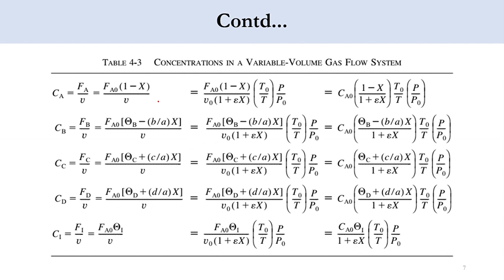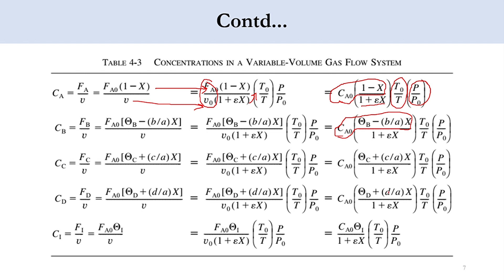The stoichiometric table is built as follows. C_A = Ca0 times (1 - X) / (1 + epsilon X) times (P/P0) times (T0/T). C_B = Ca0 times (theta_B - b/a times X) / (1 + epsilon X) times (P/P0) times (T0/T). C_C = Ca0 times (theta_C + c/a times X) / (1 + epsilon X) times (P/P0) times (T0/T). C_D = Ca0 times (theta_D + d/a times X) / (1 + epsilon X) times (P/P0) times (T0/T). For inert I: C_I = Ca0 times theta_I / (1 + epsilon X) times (P/P0) times (T0/T).